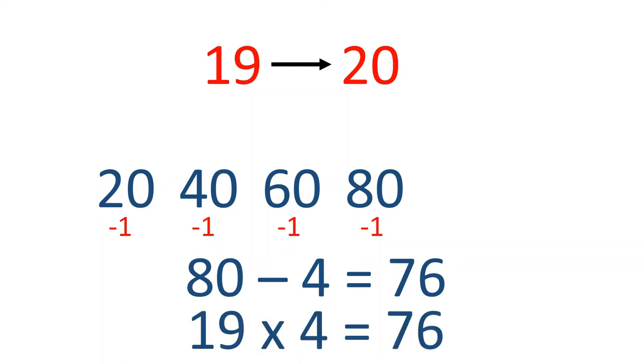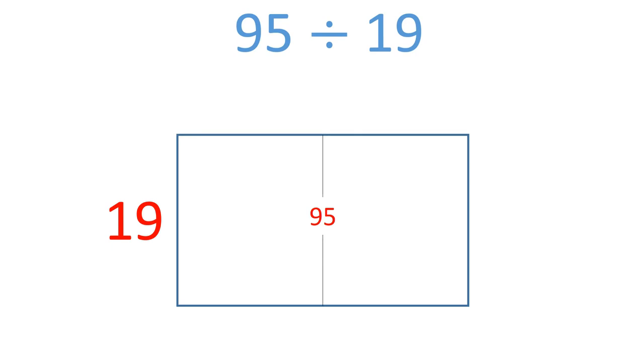If that method doesn't work for you, though, you can work the multiplication out on the side. I'm going to label the first section of the length 4, so the area of the first section is 76, because 19 times 4 equals 76.